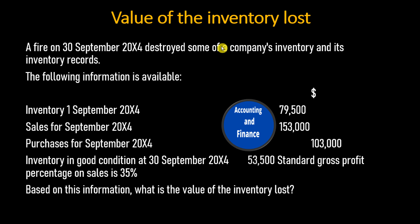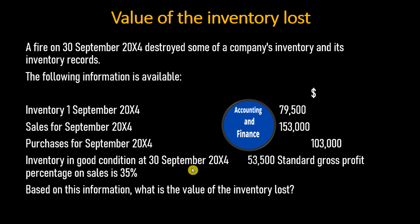Value of the Inventory Lost. A fire on 30 September 20X4 destroyed some of a company's inventory and its inventory records. The following information is available: Inventory 1 September 20X4, $79,500; Sales for September 20X4, $153,000; Purchases for September 20X4, $103,000; Inventory in good condition at 30 September 20X4, $53,500. The standard gross profit percentage on sales is 35%. Based on this information, what is the value of the inventory lost?